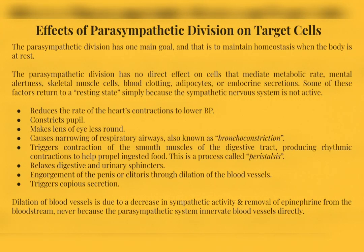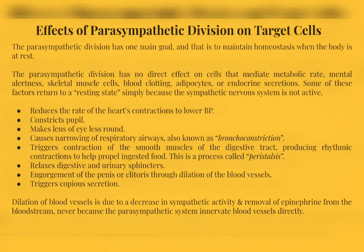The parasympathetic division has little to no effect on glands, but does trigger copious secretion. It does not innervate most blood vessels, except in specific areas like reproductive organs, though some vessels in the urinary and digestive systems do dilate when the parasympathetic system is active. Unlike the sympathetic division, the parasympathetic division has no direct effect on metabolic rate, mental alertness, skeletal muscle cells, blood clotting, adipocytes, or endocrine secretions. Some of these factors return to a resting state simply because the sympathetic system is not active, and the body is storing glucose for the next round of sympathetic activity.